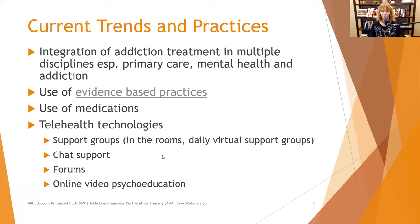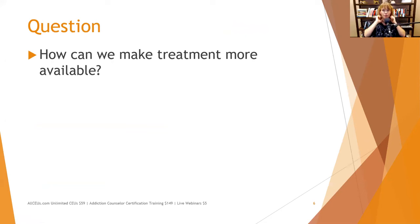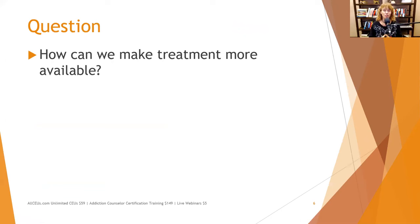Making treatment available is one challenge, but making it affordable is almost more challenging. A lot of people shy away from face-to-face groups because they don't want to see their neighbor in the waiting room. Online groups have the benefit of anonymity — most of the time people can't see each other — so people feel they maintain more privacy.